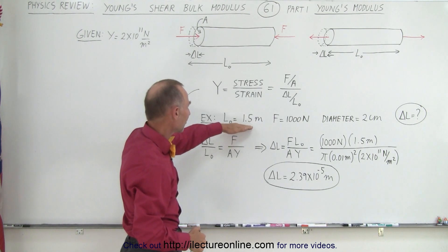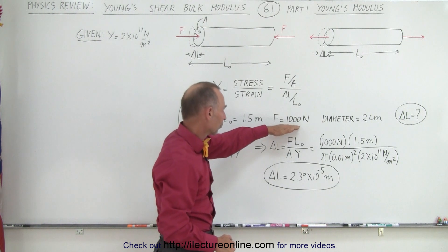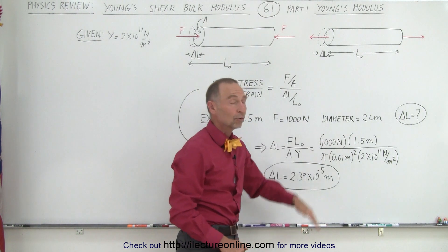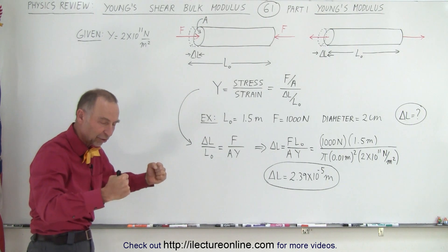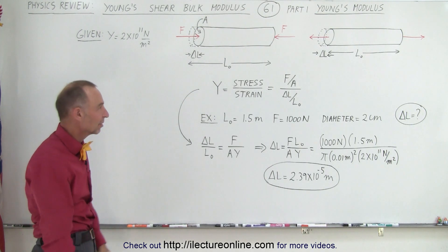Let's say we have a steel bar. Here's the information: it's 1.5 meters long, we apply a force of a thousand newtons, and the diameter is two centimeters. What will be the change in the length? It doesn't matter if we try to compress or elongate it, the result will be the same.